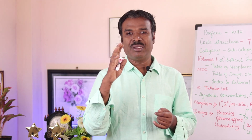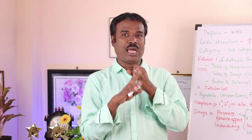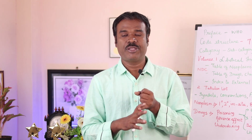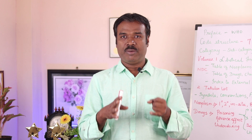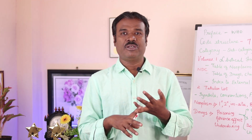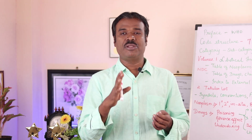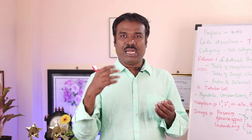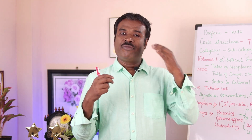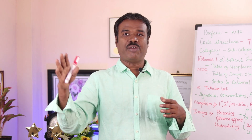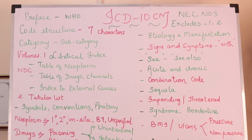The code I10 — remember this code — is actually a code for hypertension. 'I' is an alphabet, and the first character will always be an alphabet in all ICD-10-CM codes. The second character is always a number, and the third character is also always a number — as in I10, where the second is '1' and the third is '0'.